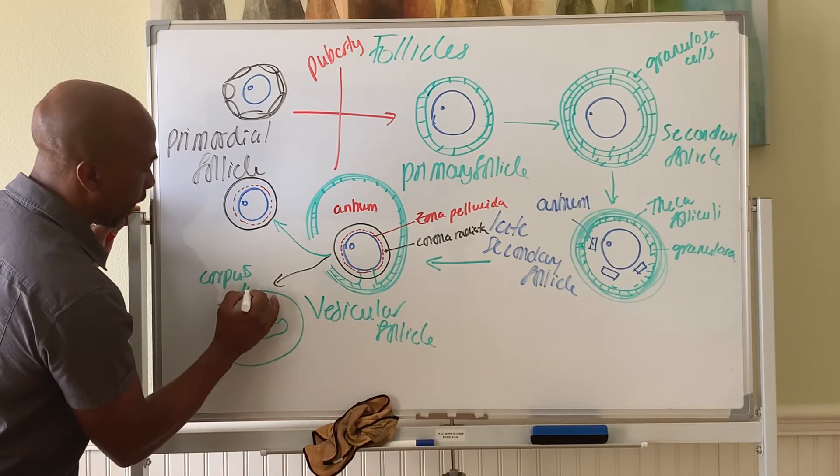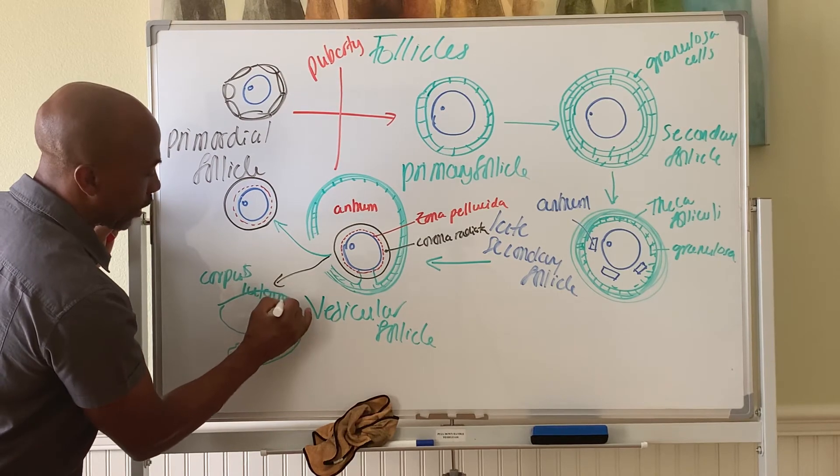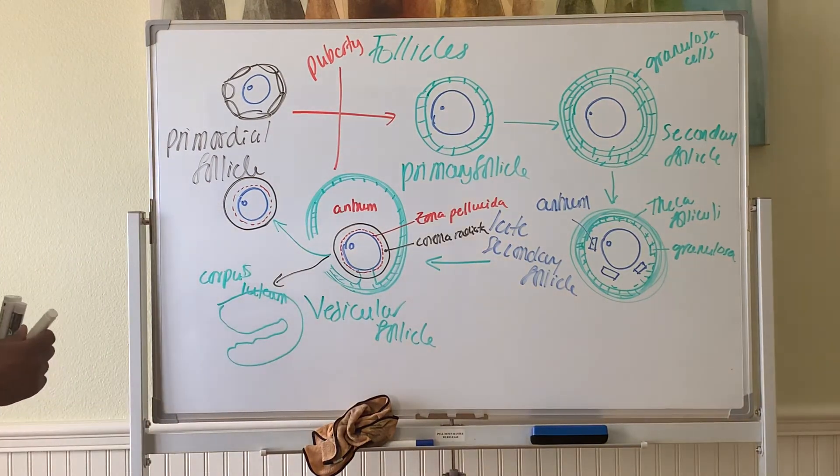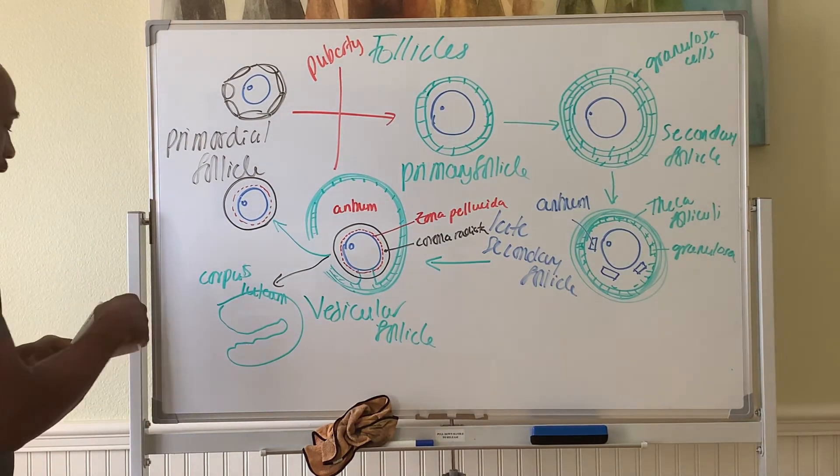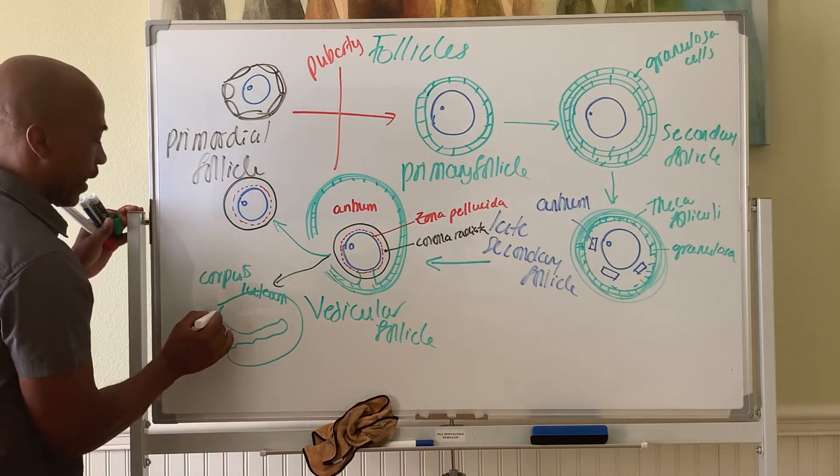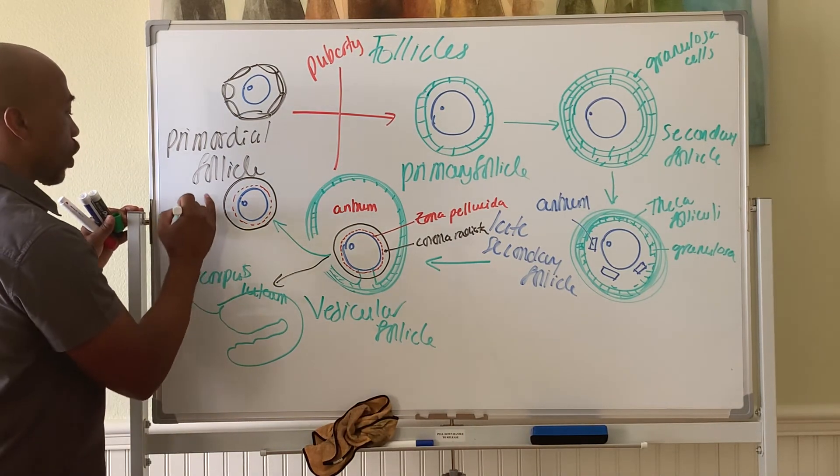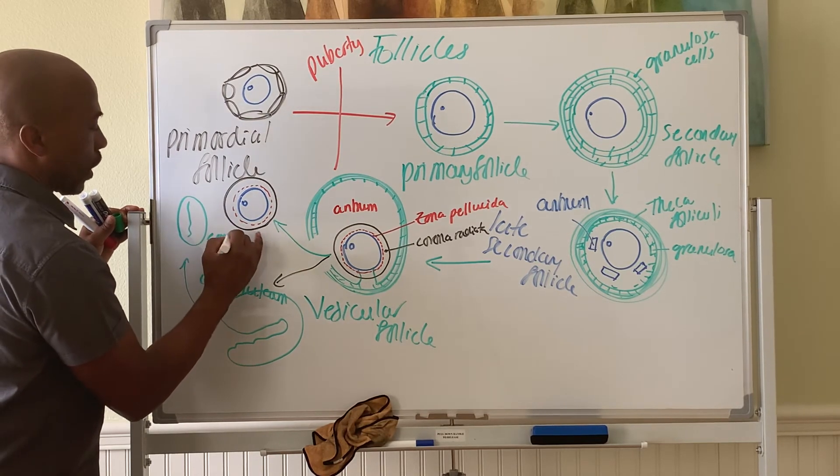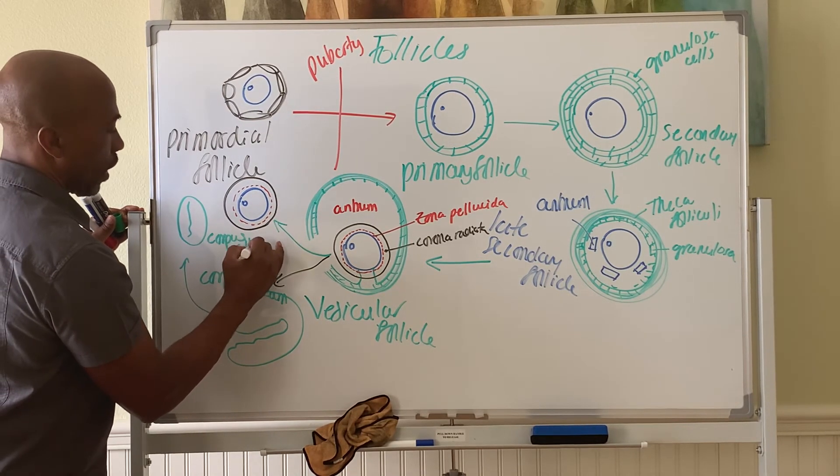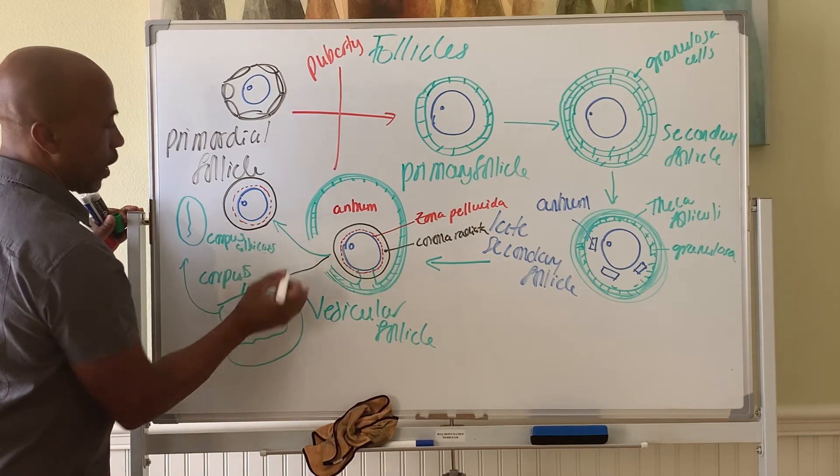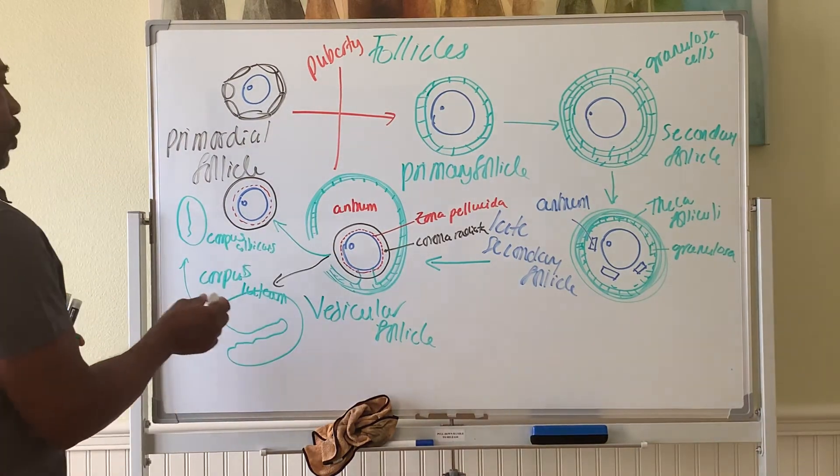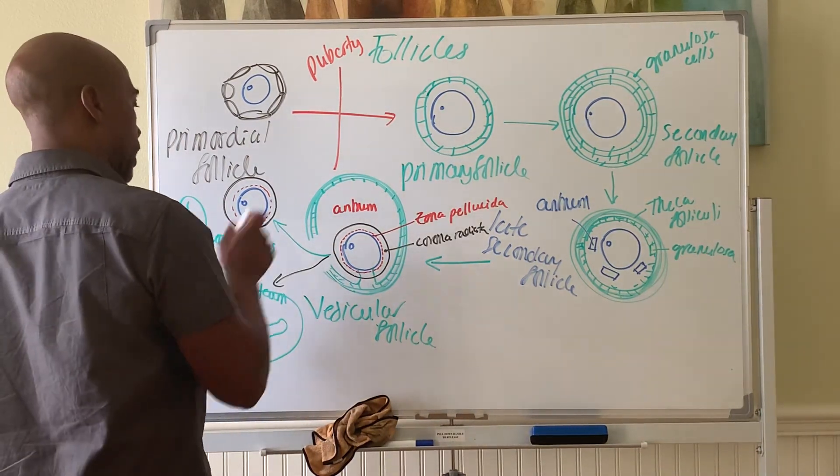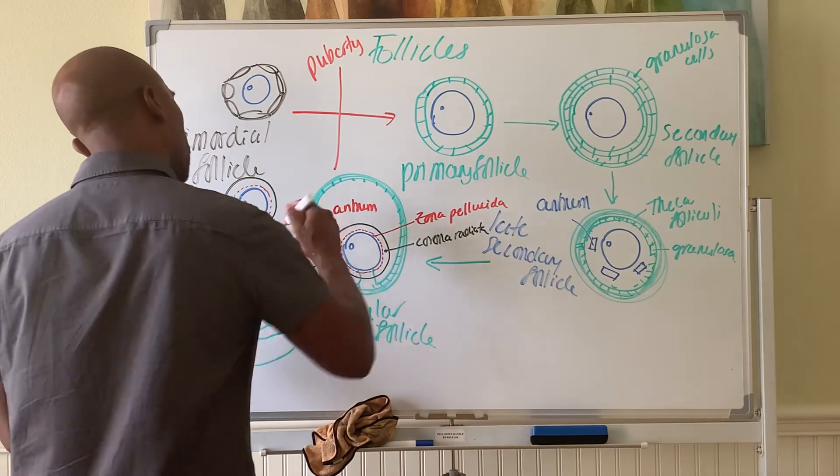Literally, it's a yellow body inside the ovary—corpus luteum. And eventually, that luteum will die and it forms what's called the corpus albicans. So again, we mark this event here as ovulation.